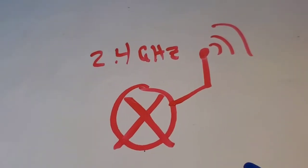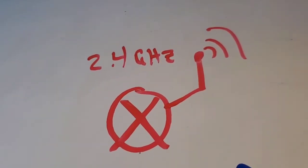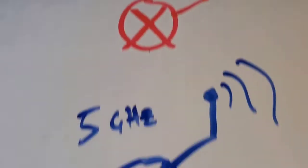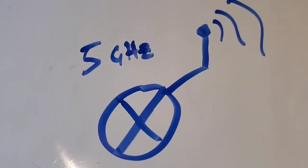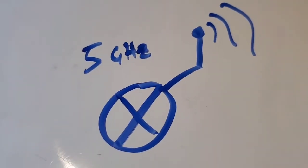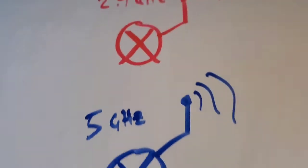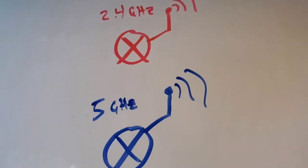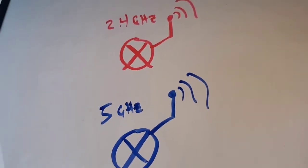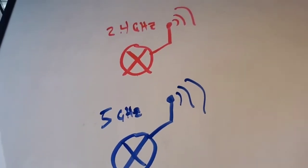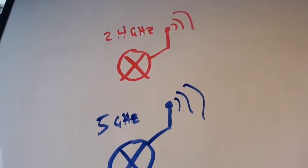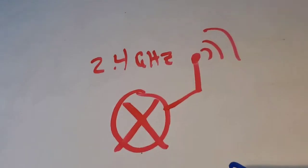Some routers give off a wireless signal at 2.4 gigahertz, while other routers give off a signal at 5 gigahertz. They both physically look the same and you really can't tell which one it is by looking at it — you just have to know the specs about the router.